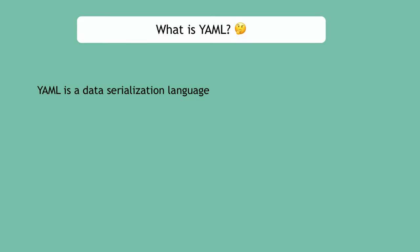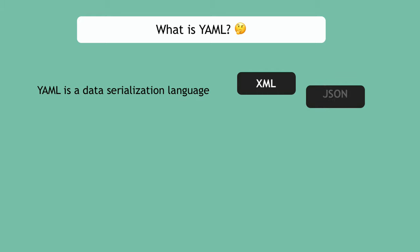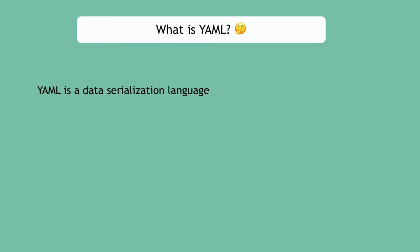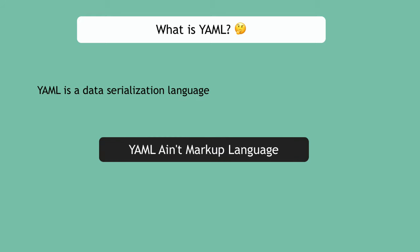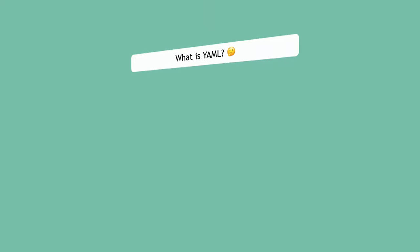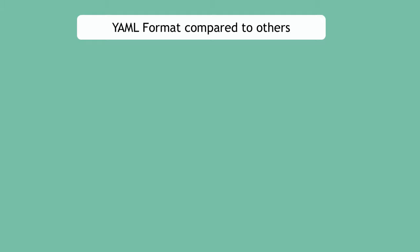Generally speaking, YAML is a serialization language, just like XML and JSON. Serialization language basically means that applications written with different technologies and languages, which have different data structures, can transfer data to each other using a common agreed-on or standard format. The most popular such formats are YAML, JSON, and XML. The name YAML actually stands for YAML ain't markup language. You can create a YAML file with one of two extensions — they're the same.